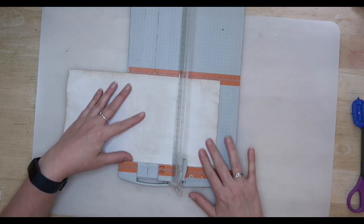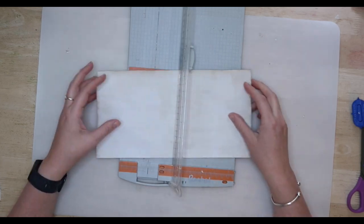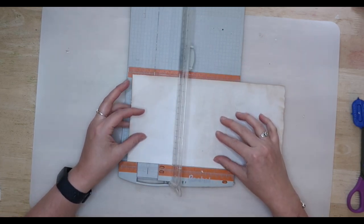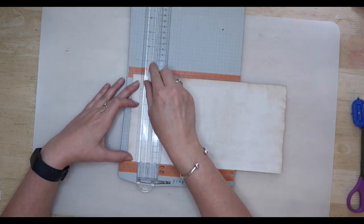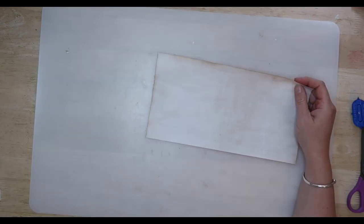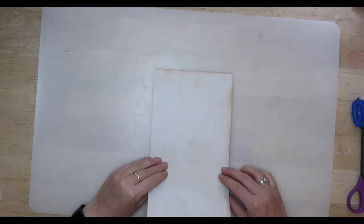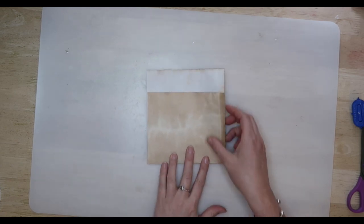Then turn it and score at 5 inches from the bottom and then at the 10 inch mark as well. Non-directional papers will work best for this as by the time we have done the required folding some of the sections are going to be upside down.